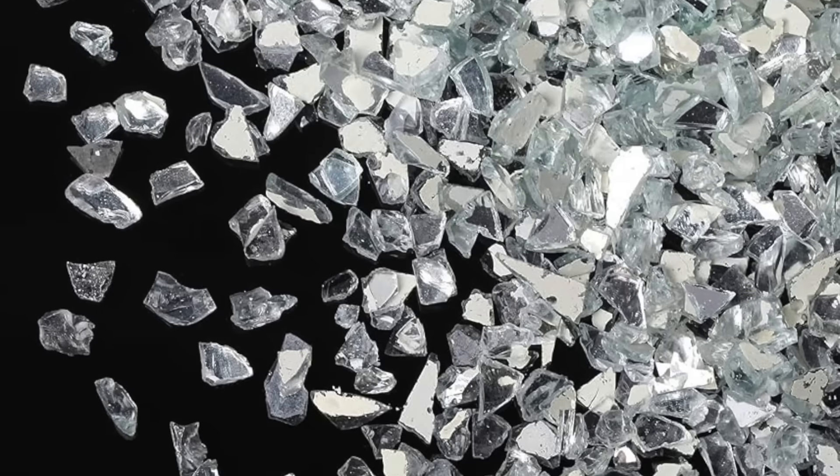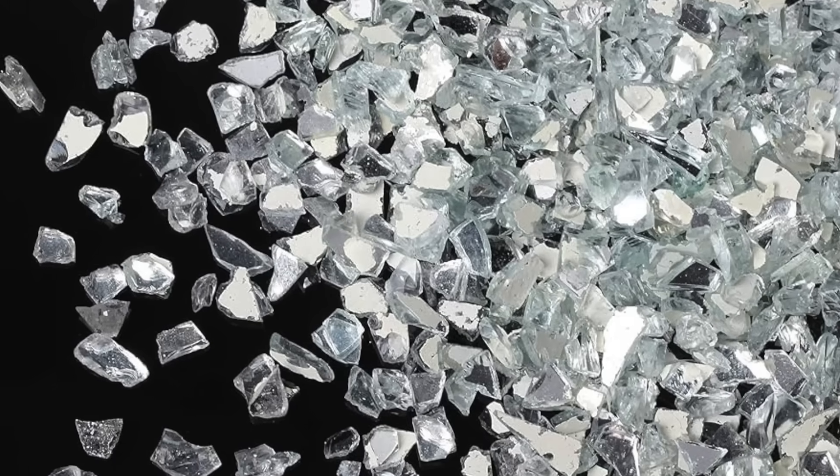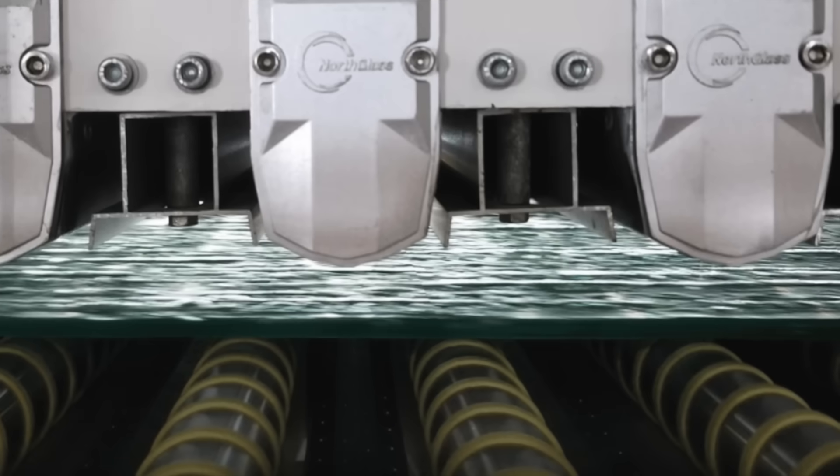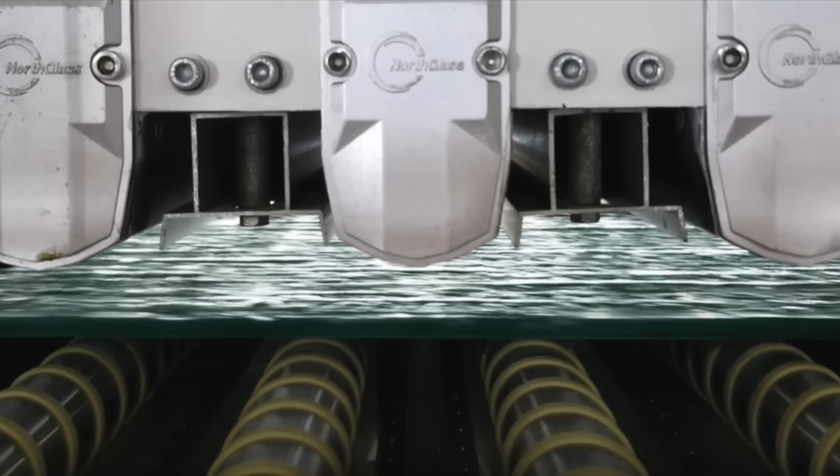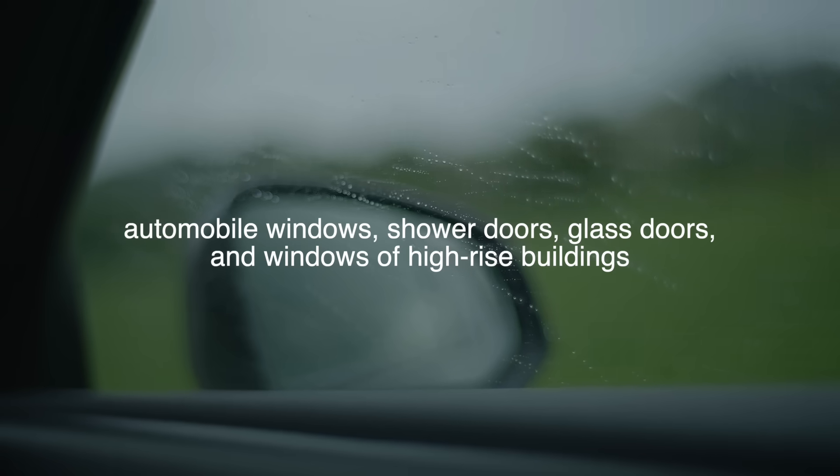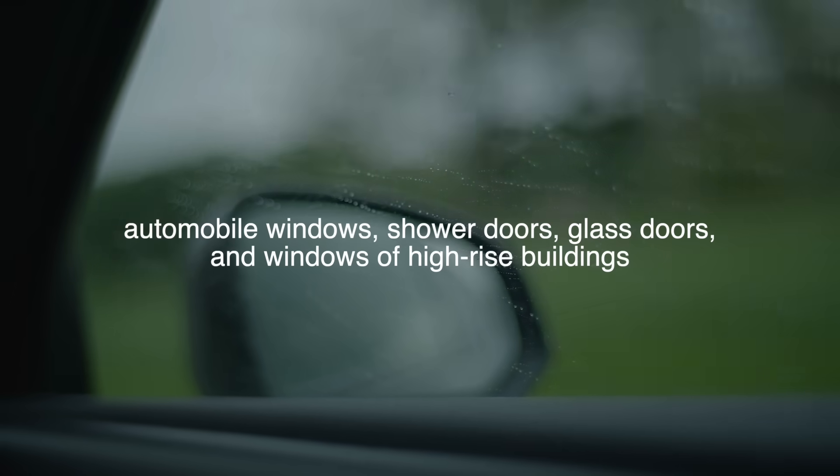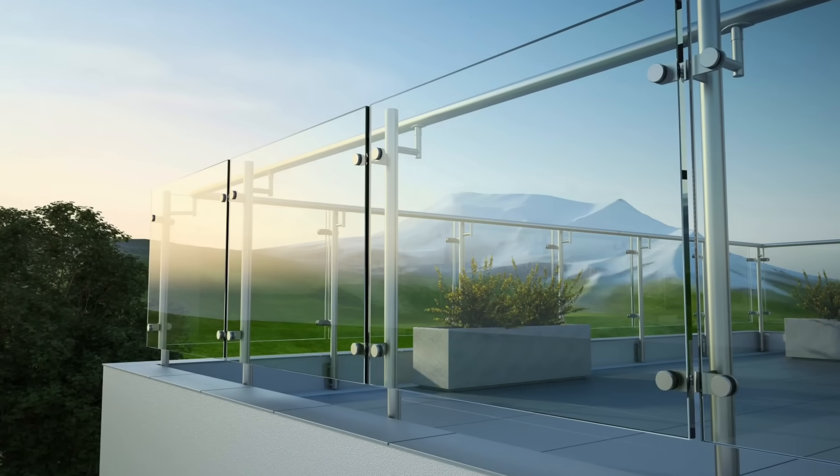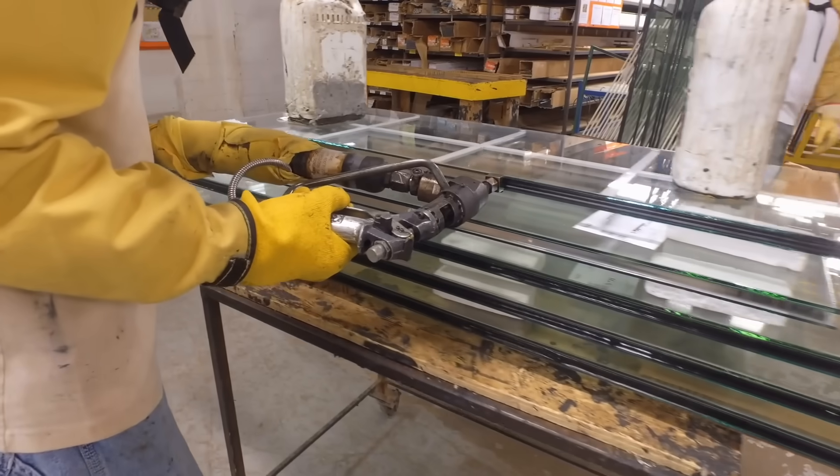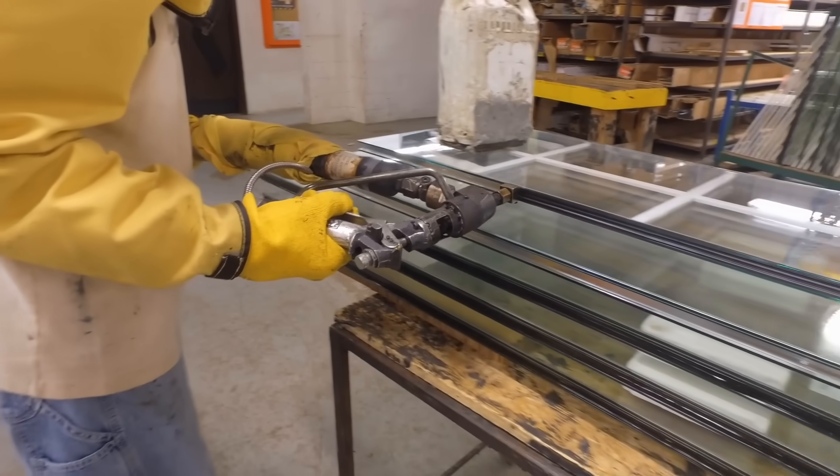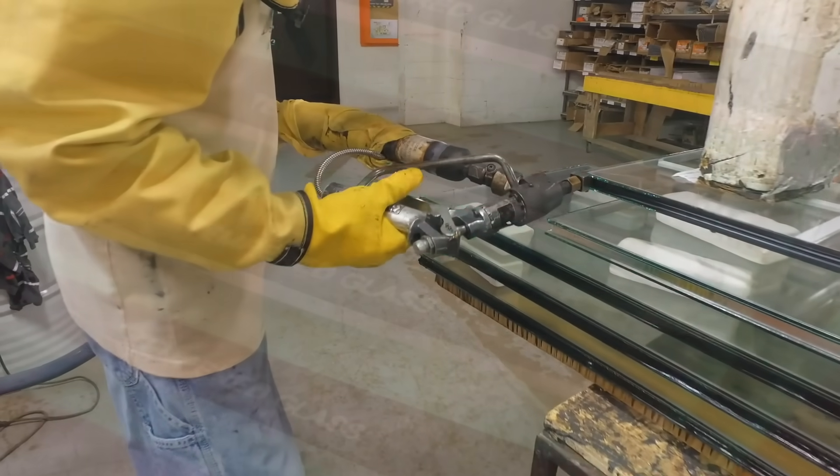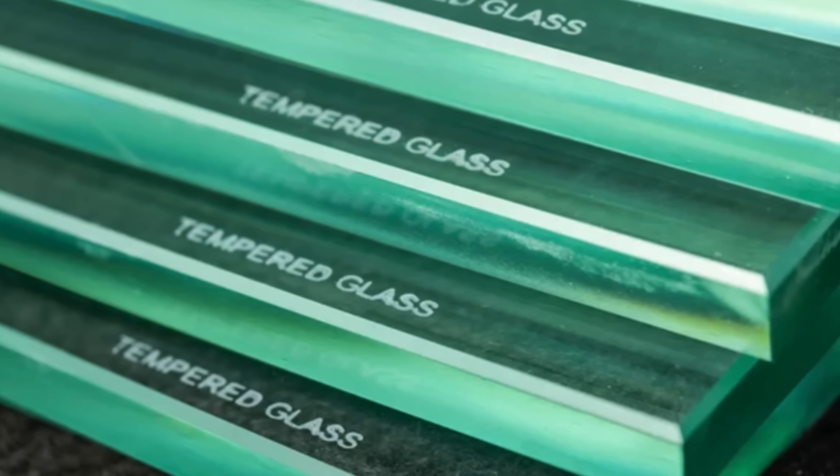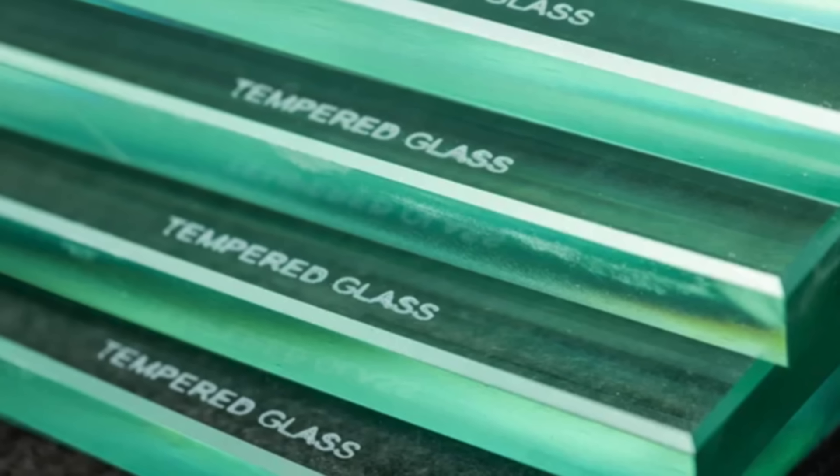When tempered glass does break, it shatters into small, blunt pieces rather than sharp, jagged shards. This characteristic makes it ideal for situations where human safety is a concern, such as automobile windows, shower doors, glass doors, and windows of high-rise buildings. The tempering process makes it approximately four to five times stronger than untreated glass, making it more resistant to breakage from impacts or pressure.